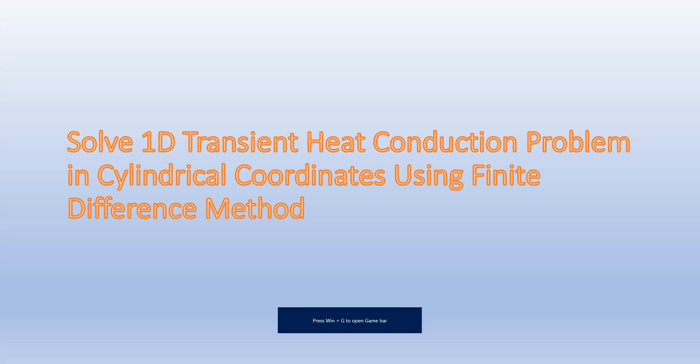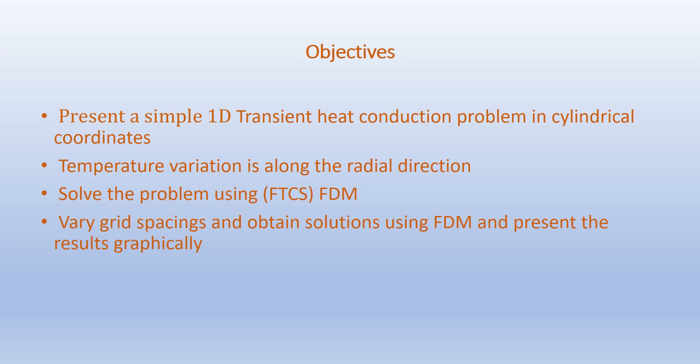In the last video we solved the 1D steady-state heat conduction problem in cylindrical coordinates using finite difference method. In this video we're going to solve the 1D transient heat conduction problem in cylindrical coordinates using finite difference method. Our objectives are to present a simple 1D transient heat conduction problem where temperature variation is along the radial direction only. We'll solve the problem using the forward time centered space finite difference method, vary grid spacings, and present the results graphically.